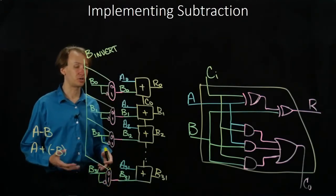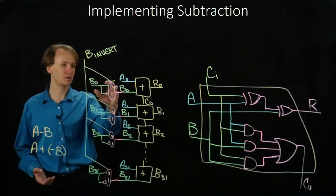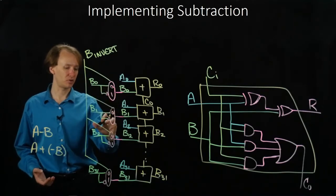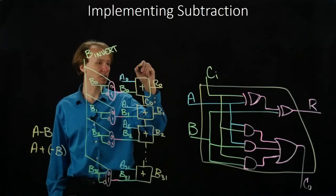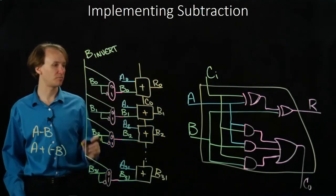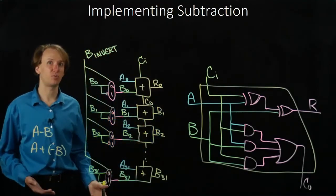But if I want to do subtraction, then I'd invert B. So I'd set the B invert line to 1. Then it would select all of those NOT Bs. But then I also need to add in 1. So I flip all the bits in B.